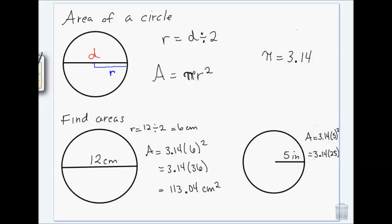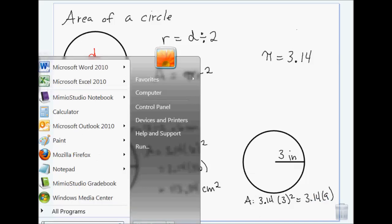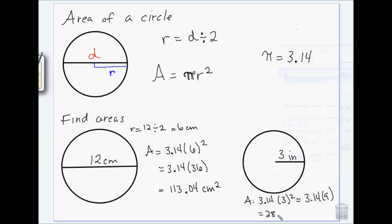Three inches — okay, let's redo this. The area is 3.14 times three squared, so that's 3.14 times nine, which gives us 28.26 square inches.